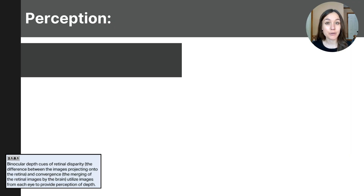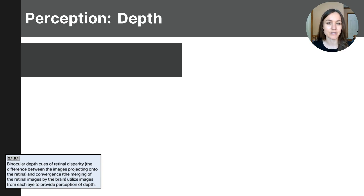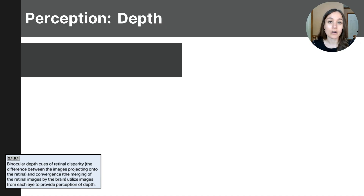Let's dive deeper into how the brain processes the visual information that comes in from the eyes, focusing on depth. Have you ever wondered how your brain is able to determine how far away objects are without actually touching or measuring them? Your brain does it so quickly you've probably never even contemplated it. Our brain relies on a variety of visual cues in our environment to determine how far away objects are, and two different types are called monocular cues and binocular cues.